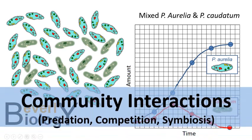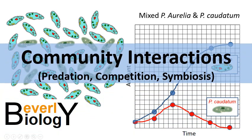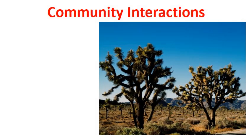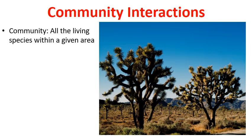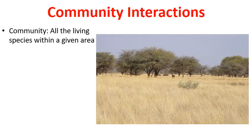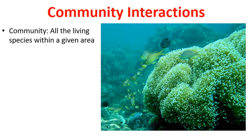In this presentation we're going to discuss community interactions that exist within the ecological world. A community is all the living species within a given area. All the reptiles, insects, and plants make up the community of a desert. All the life in an African savannah makes up that community. All the invertebrates, fish, and corals make up the life in an ocean community.